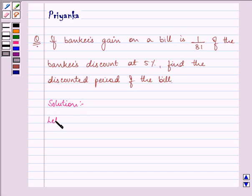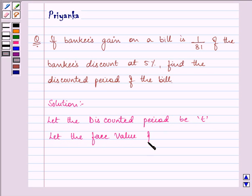Here let the discounted period be T and let the face value of the bill be S.